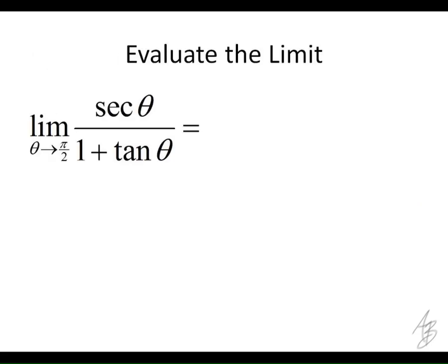In this particular example, secant is 1 over cosine, and tangent is sine over cosine — we're going to need to know that. The secant of theta, as theta goes to pi over 2, is going to be a vertical asymptote. Since secant is 1 over cosine, cosine of pi over 2 is 0, and 1 over 0 is going to give us infinity.